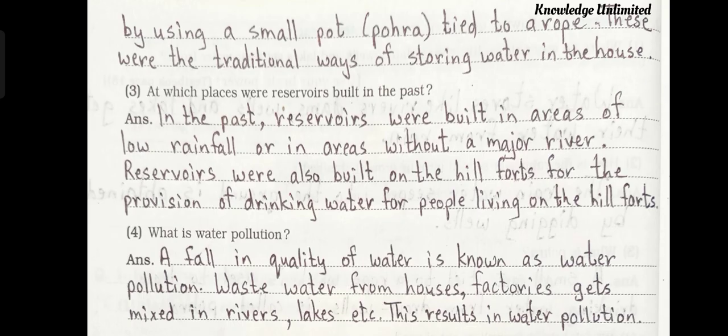Question number four: what is water pollution? Answer: a fall in quality of water is known as water pollution. Waste water from houses and factories gets mixed in rivers, lakes, etc. This results in water pollution.